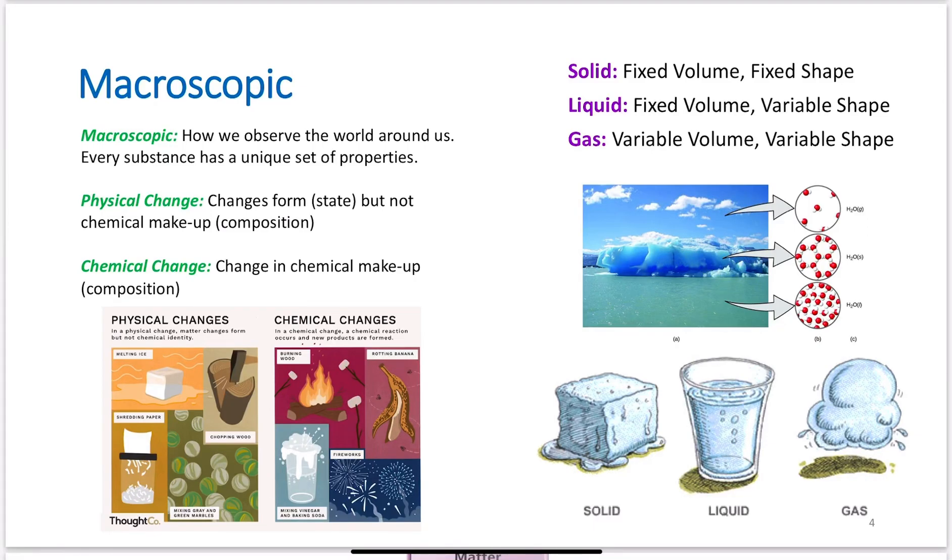As we start talking about chemistry, we first need to talk about the different types of perspectives we have, the different types of things we'll talk about. First, we have the macroscopic view, the microscopic view, and the symbolic view.